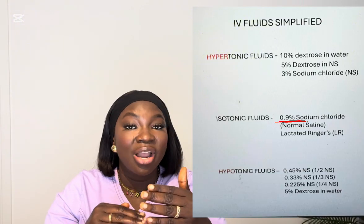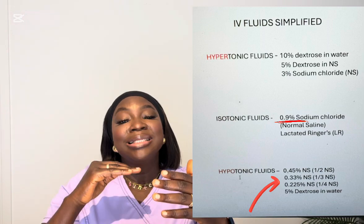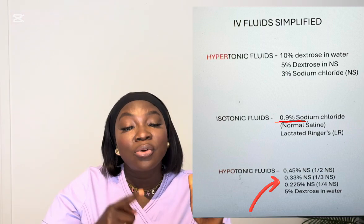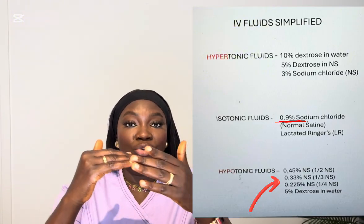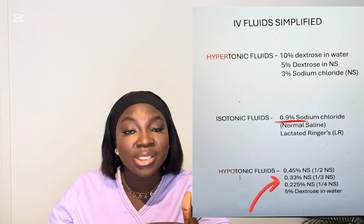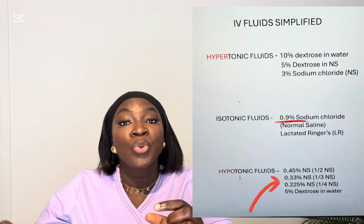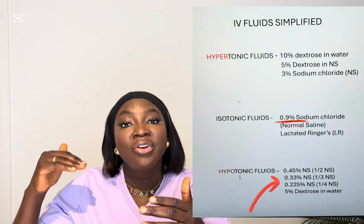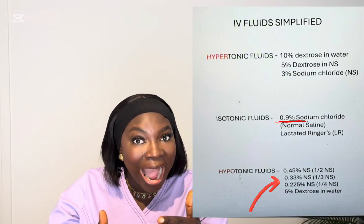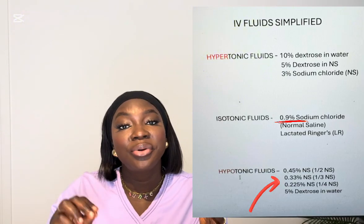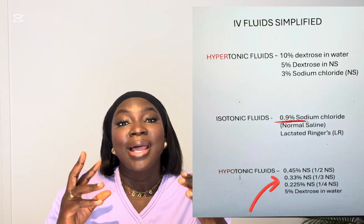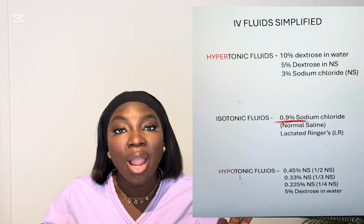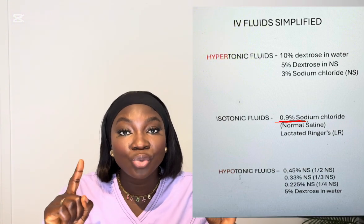To identify hypotonic fluids, the number before the fluid name will be lower than 0.9. As the name implies, hypo means low. That's when you see 0.45 normal saline (half saline), 0.33 normal saline (one-third normal saline), and 0.225 normal saline (one-fourth normal saline).